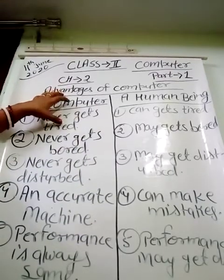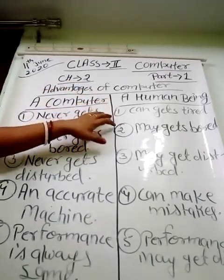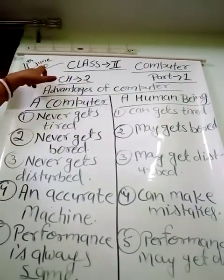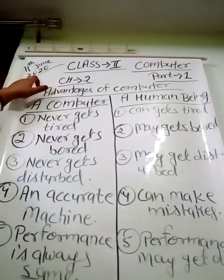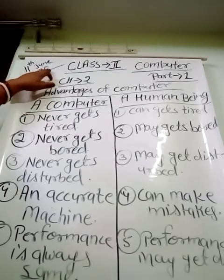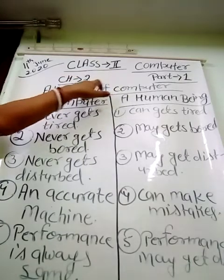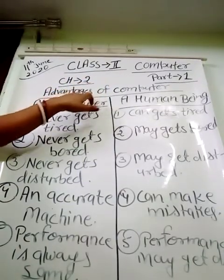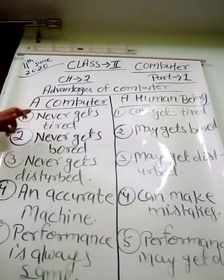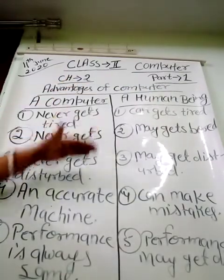What you have to do: take out your computer copy, your school computer copy, and on a new page, first of all write down the date — today's date, 11th June 2020. Then you have to write the chapter number and chapter name.